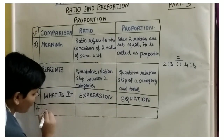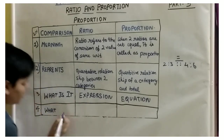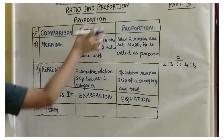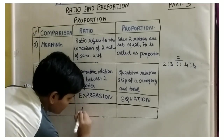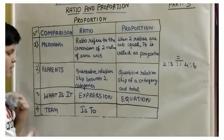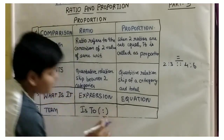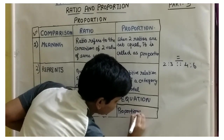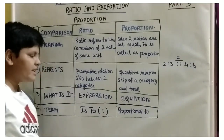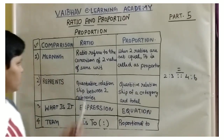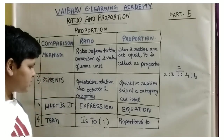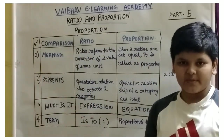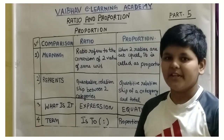The last difference is the terms we use. For ratio, we use the term 'is to.' For proportion, we use 'proportional to.' There are many ways to pronounce these, but we are going to focus on 'is to' and 'proportional to.' I hope you have understood this topic about proportion and the difference between ratio and proportion. Thank you for watching. Please like, share, and subscribe to our channel.